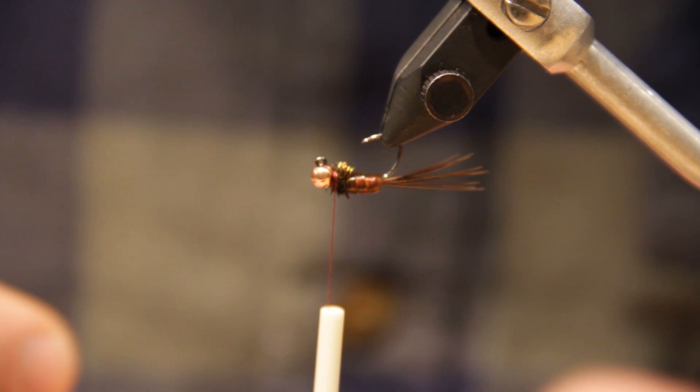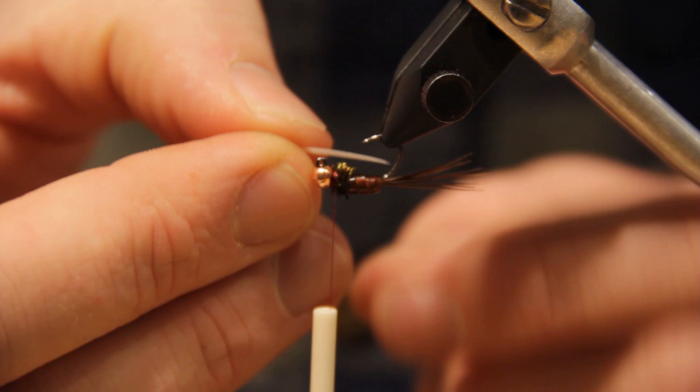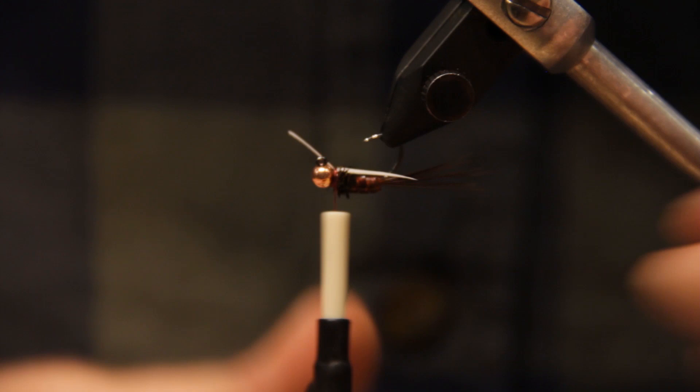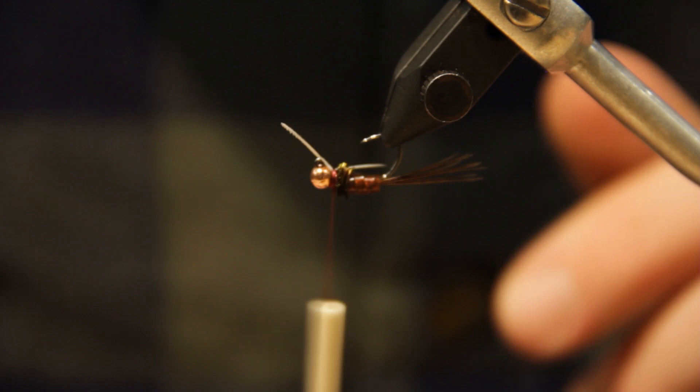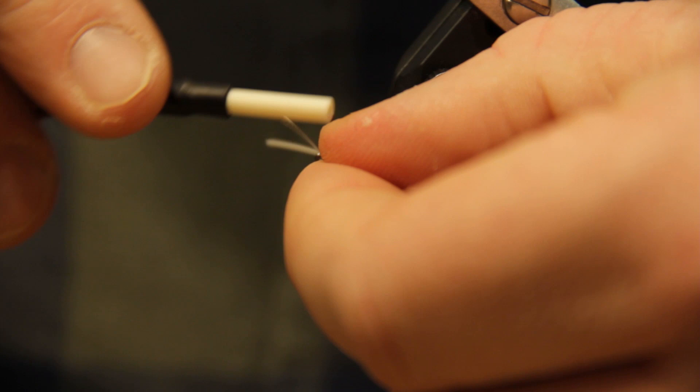So when you have the fly turned over, we're going to add in some white biets. And I'm going to tie these in one at a time, makes it a little bit easier. I'm not going to tie them super long, just as long as they're about the same length.